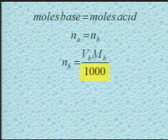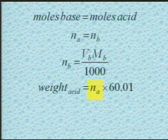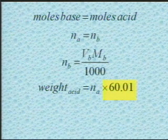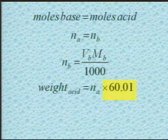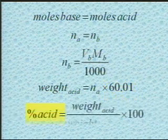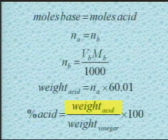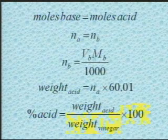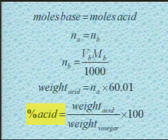To determine the weight of the acid, take the number of moles of acid — which equals the number of moles of base you've just calculated — and multiply by 60.01. 60.01 is the molecular weight of acetic acid, which is the acid in vinegar. This will tell you the weight of acid in grams. Then, to determine the percent of acid in the sample, take the weight of the acid in grams divided by the weight of the vinegar you took when you first got your sample, and multiply by 100. These are the numbers you should compare to calculate the relative average deviation.